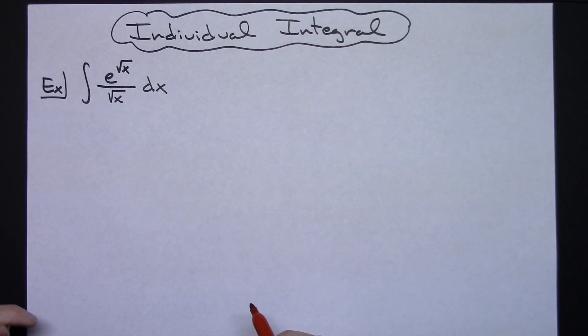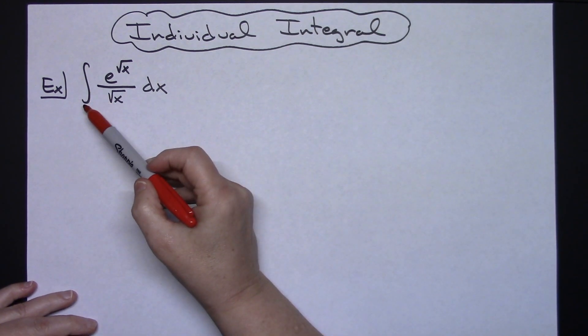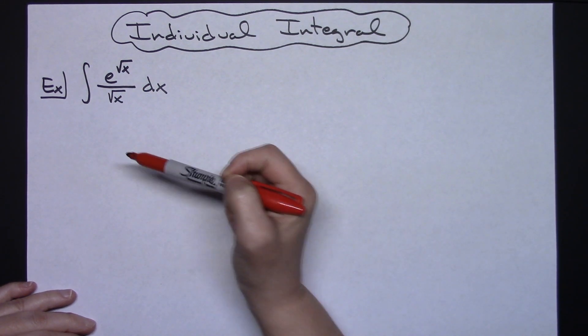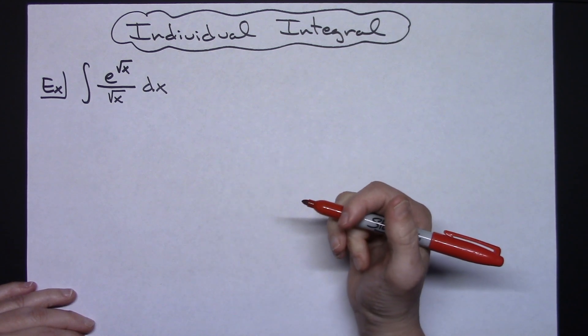In this video I'm going to be working out an individual integral. We're going to take a look at the integral of e to the square root of x all over square root of x dx. It is going to be just a straight u substitution integral.